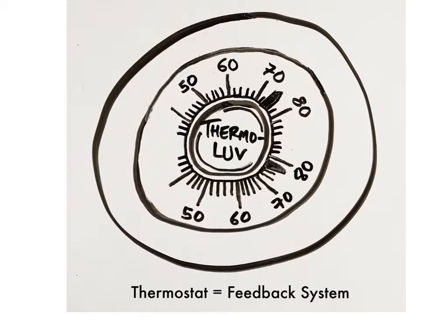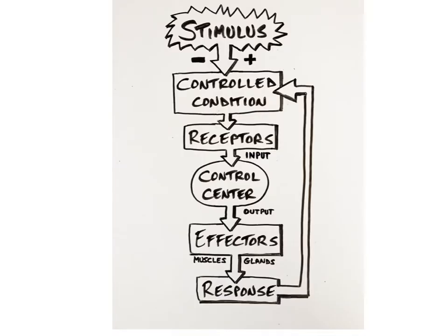A great analogy for a feedback system is how our home thermostat works to maintain a comfortable room temperature on a hot day. The thermostat continually monitors the air temperature inside the house and makes changes by turning on the home's cooling system if the temperature rises above a set point. In the body, the condition that is monitored is called the controlled condition, and a stimulus is anything that changes the controlled condition.